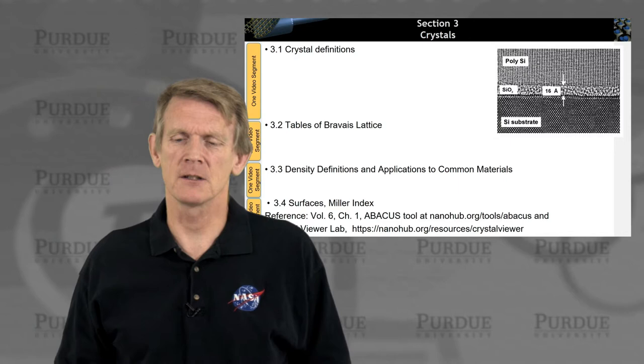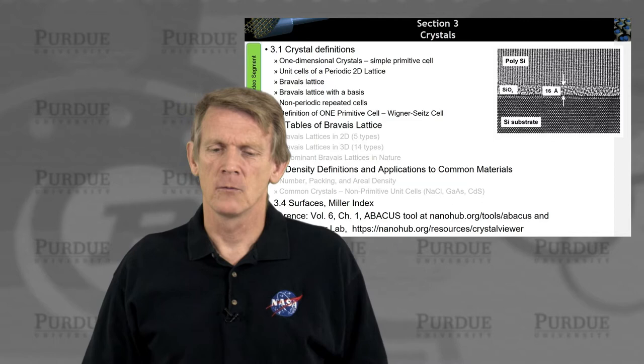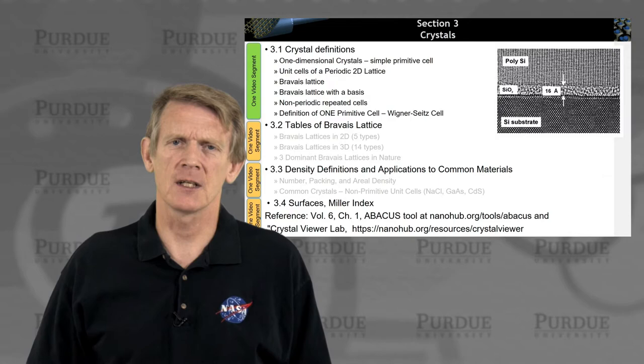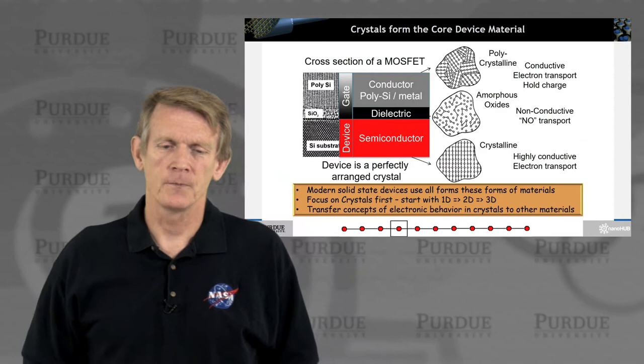Of course, this is all motivated by real devices, where here you have an image again of a two-dimensional MOSFET. We'll discuss crystals in the sense of first some definitions of one-dimensional materials and then work up to descriptions of primitive cells and what is a Bravais lattice.